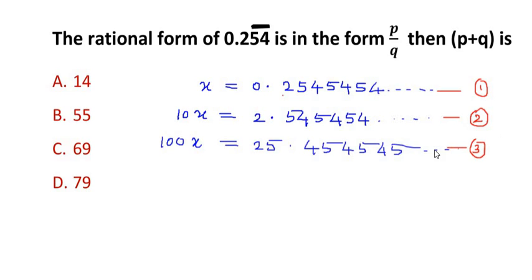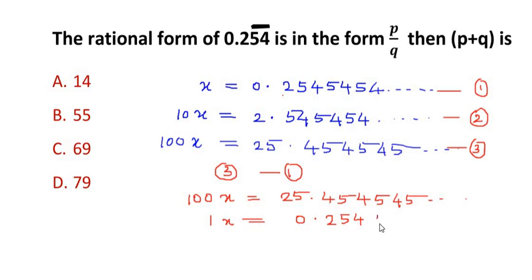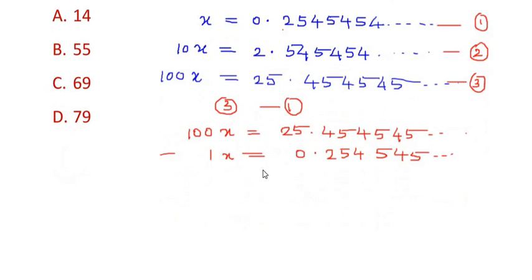Now let us try to subtract equation three with equation one. Let us see if the decimal points cancel out each other and turn out to be zero. So here we have 100x as 25.454545 and so on, and the first one was 1x is equal to 0.254545 and so on. So let us subtract these two and see what we get.